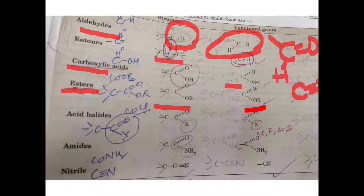And in the same way, ketone is there — for ketone, it is C double bond O. Similarly, carboxylic acid is there — it will be COOH. Then esters are there, so it will be COOR. This is the functional group. Then acid halides are there, so it will be COX — that is C double bond O with Cl.